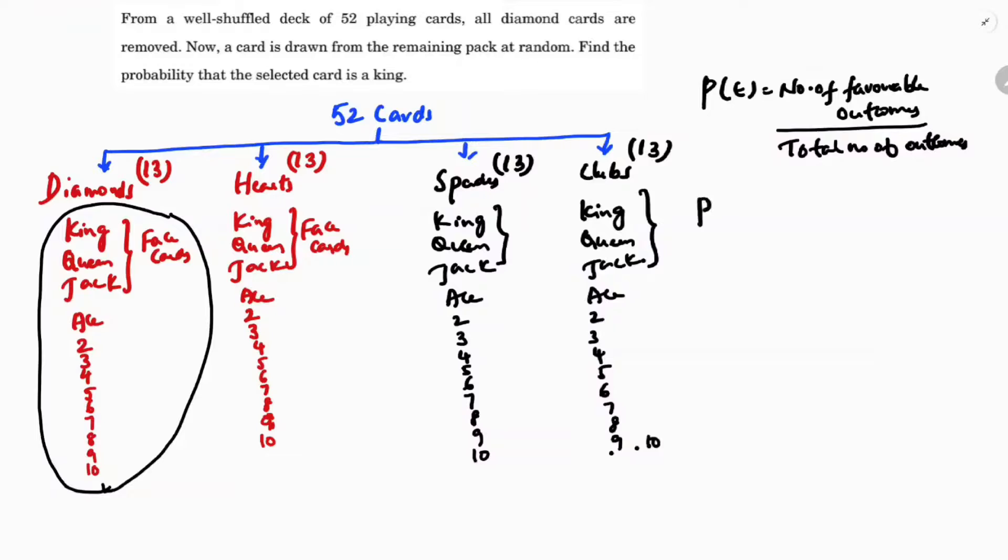So here the question is what is the probability of selecting a card which is king. Now total outcomes are clearly 13, 13, 13, which is 39, because all the diamonds are removed. And if you observe the remaining cards - hearts, spades, and clubs - we have only three kings. Here see, one, two, three.